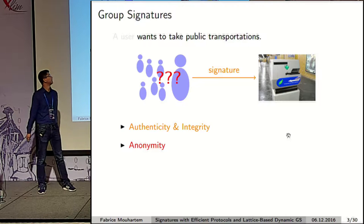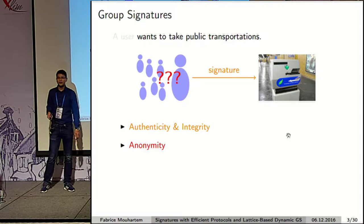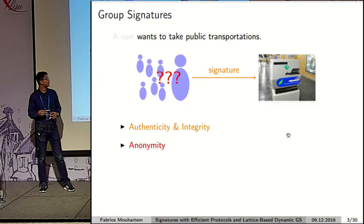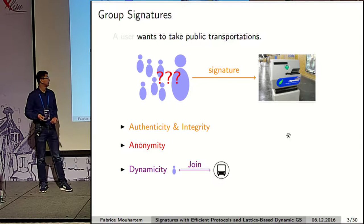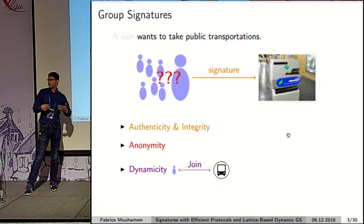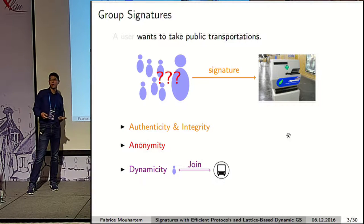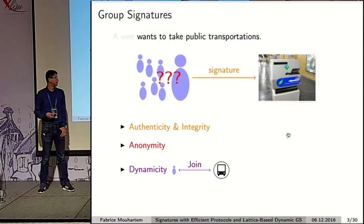So he also wants some anonymity property. On top of that, we have the public transportation company who also wants some properties, like dynamicity, which would allow new users to subscribe for a valid subscription at any time dynamically.